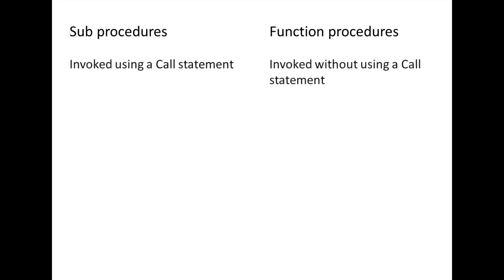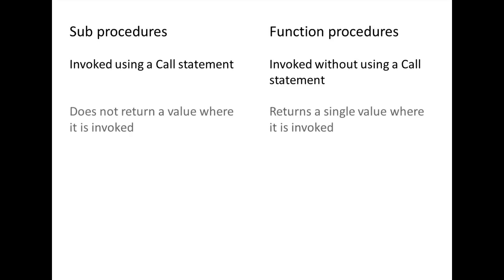There are two main differences between sub and function procedures. First, sub procedures are invoked using a call statement, while function procedures do not require a call statement. Second, after a sub procedure is completed, it does not return any value to the location where it is invoked. However, a function procedure returns a single value to the location where it is invoked.